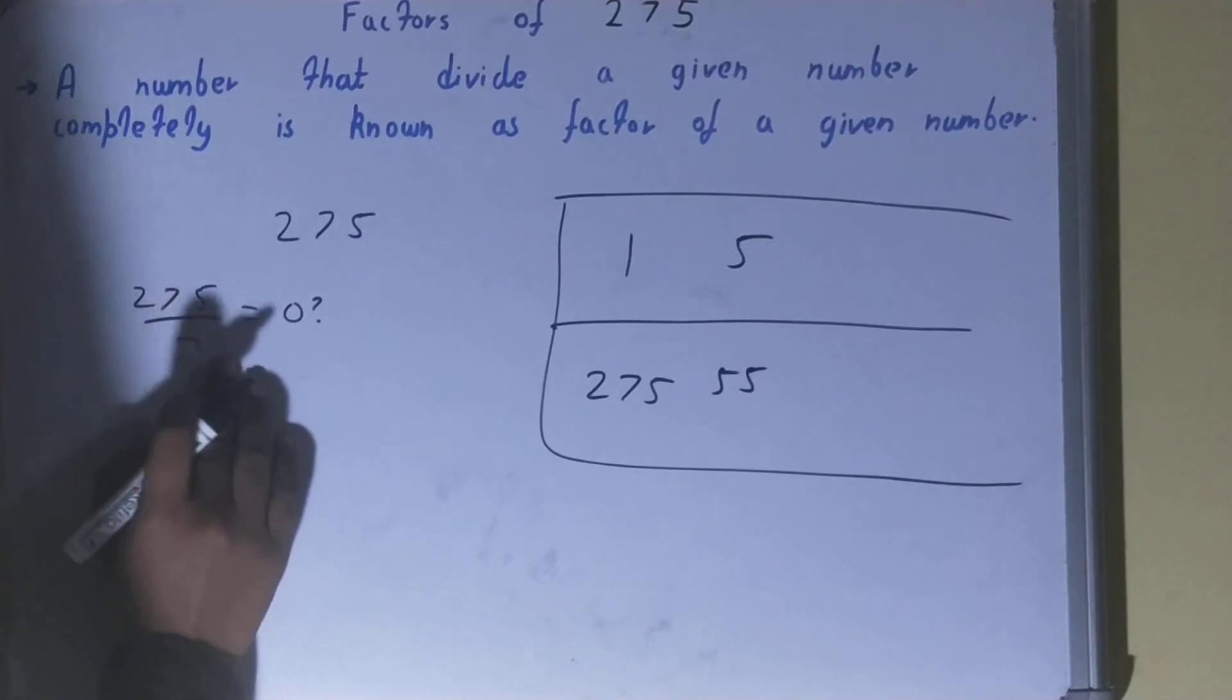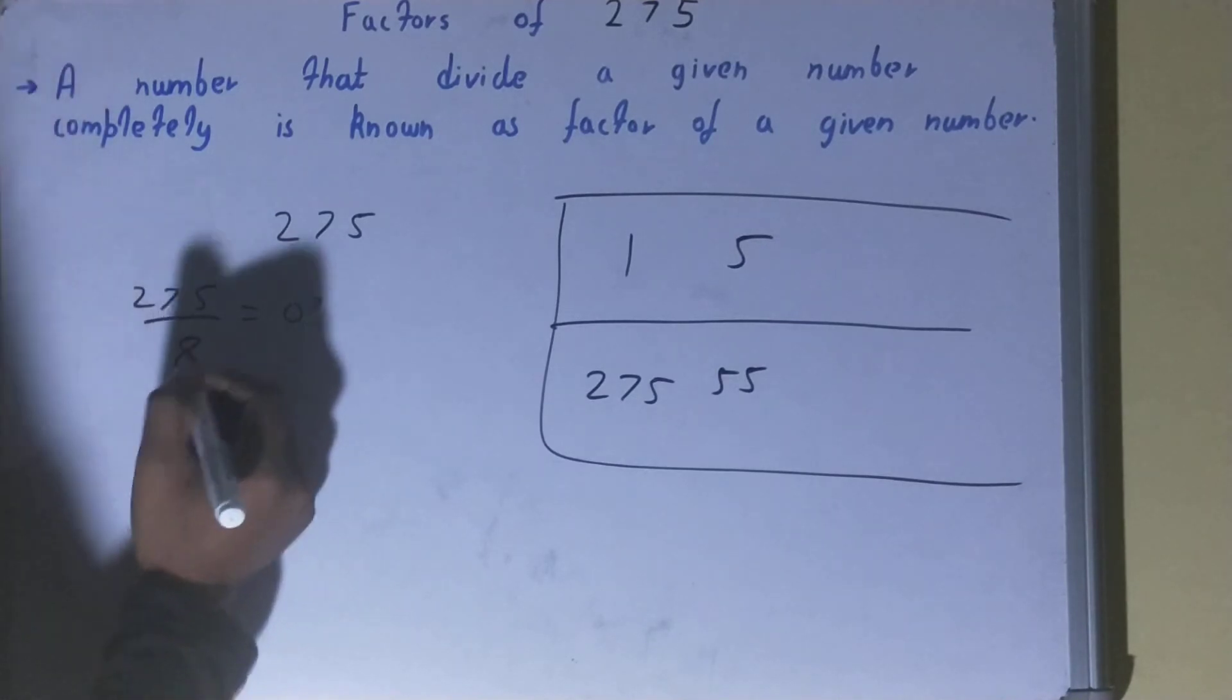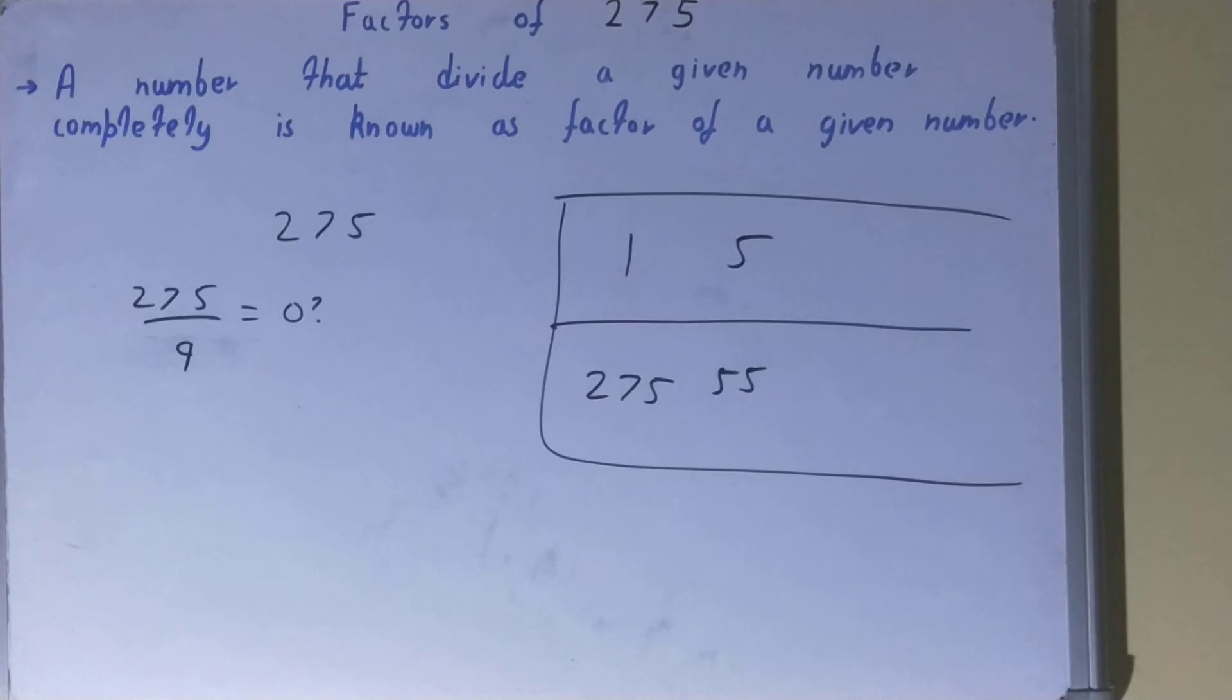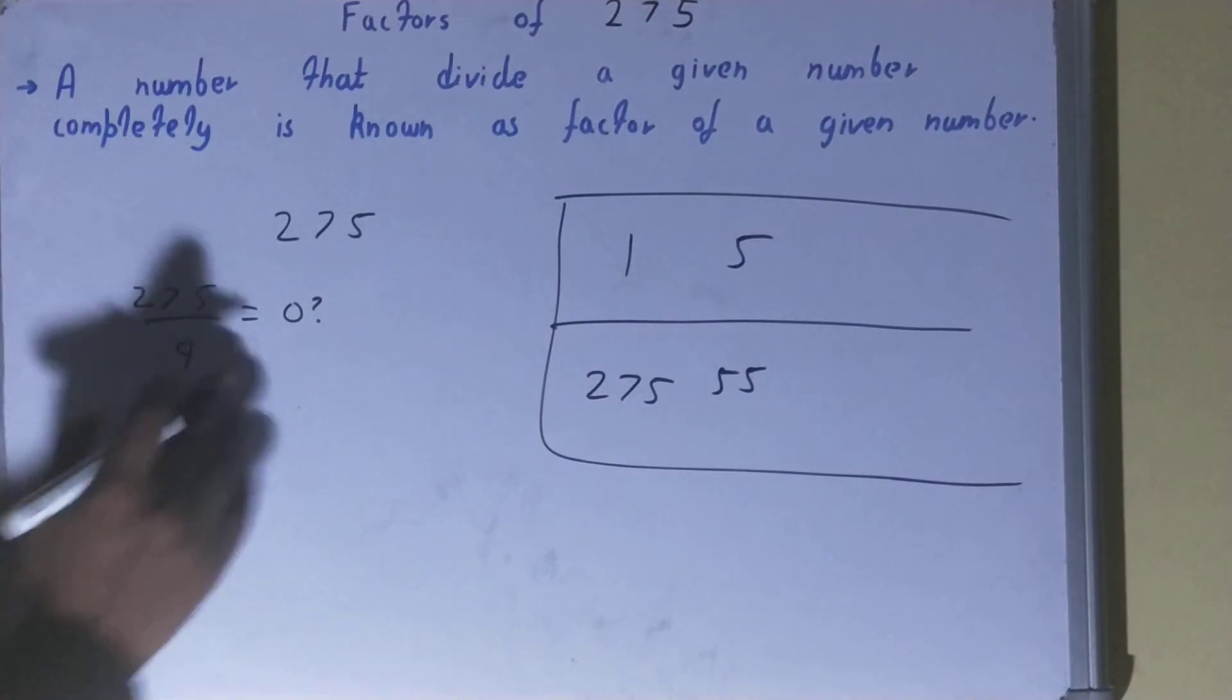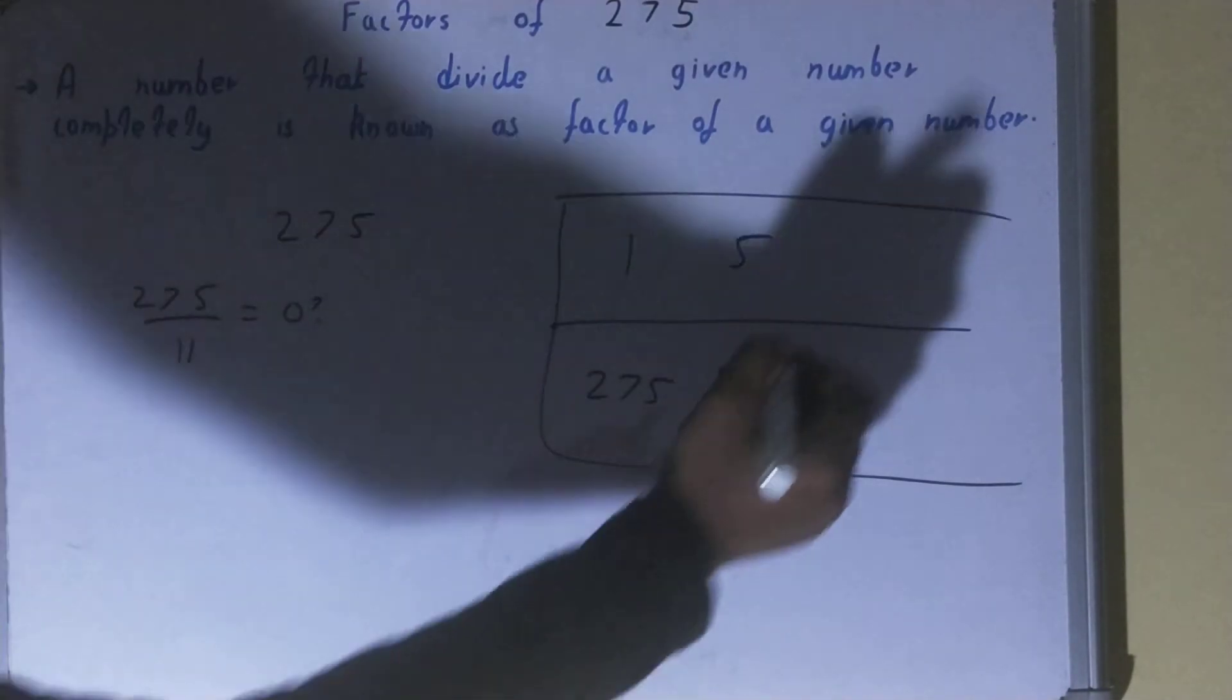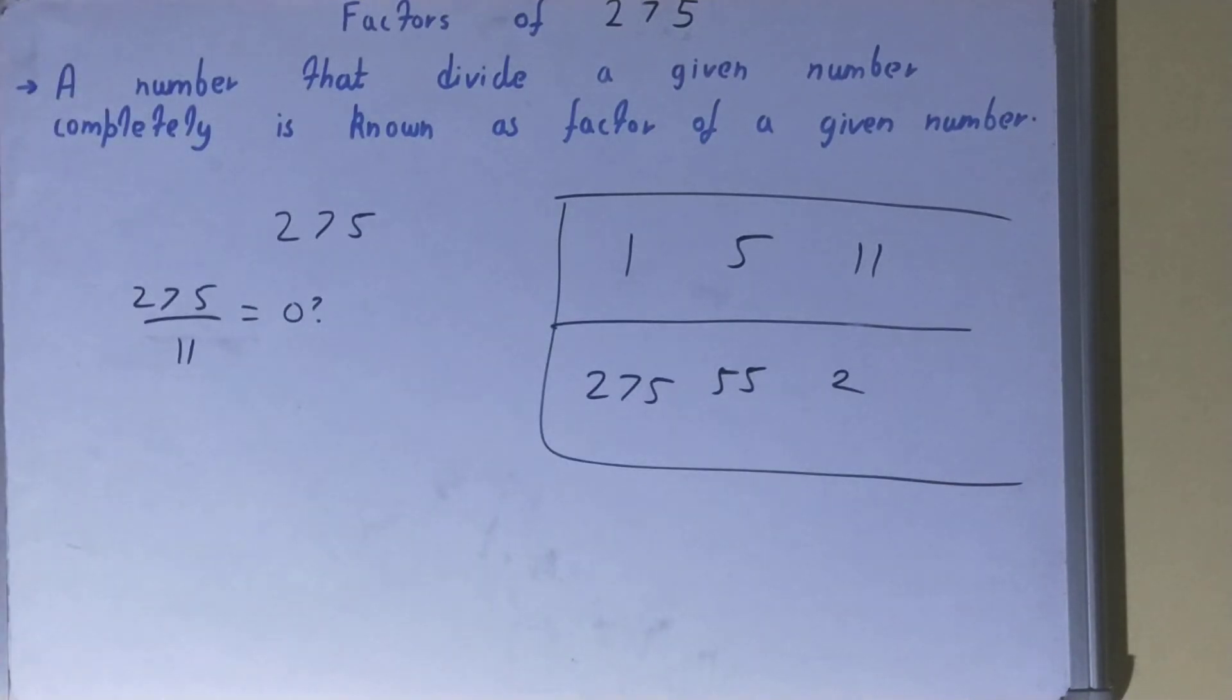13? No. 8 is an even number. Let's check with 9. 9 threes are 27, 5 left, not possible. Let's check with 11. 11, 11 twos are 22, 5, 5, yes it is possible. So 11 is a factor. And 11 times what? 11 twos are 22, 11 fives are 55, so it will be 25 times. So 11 is a factor and 25 will also be the factor.